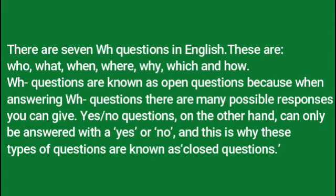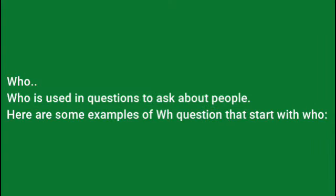There are seven WH questions in English. These are: who, what, when, where, why, which, and how. WH questions are known as open questions because when answering them, there are many possible responses. Yes/no questions, on the other hand, can only be answered with yes or no, which is why they are known as closed questions.